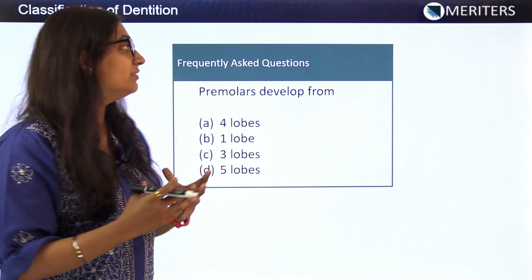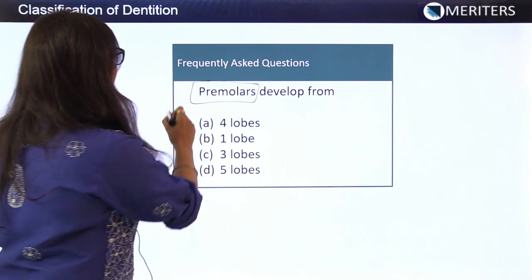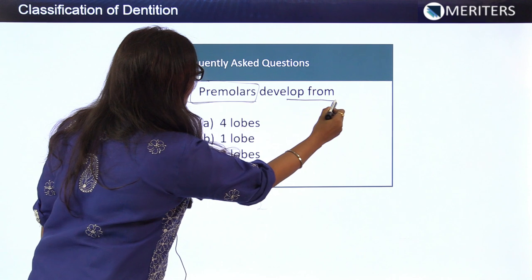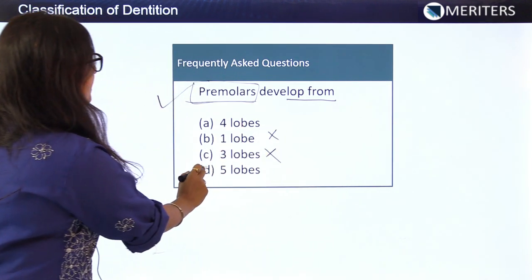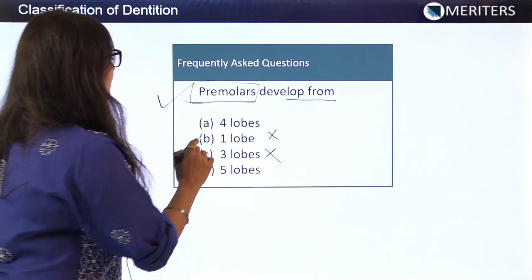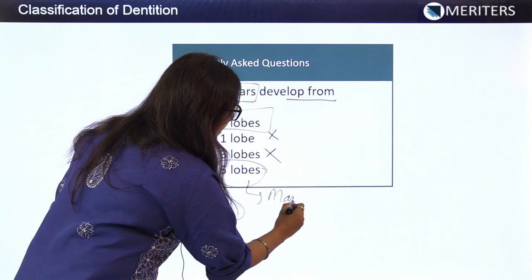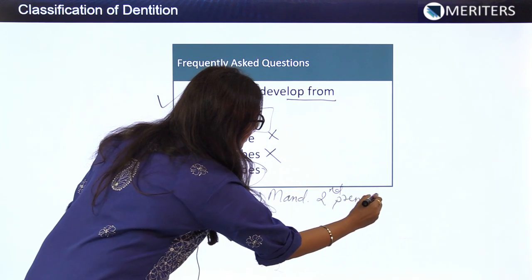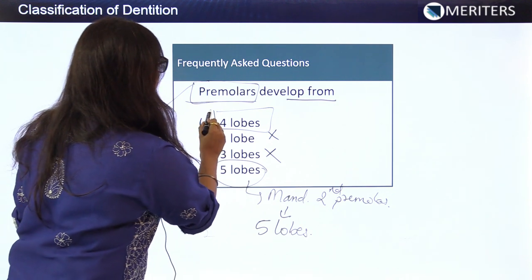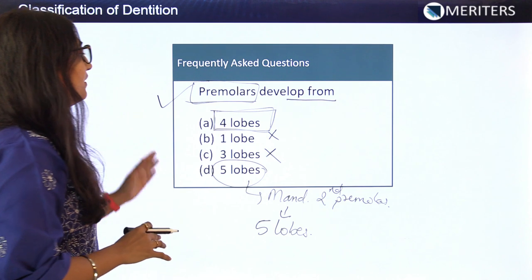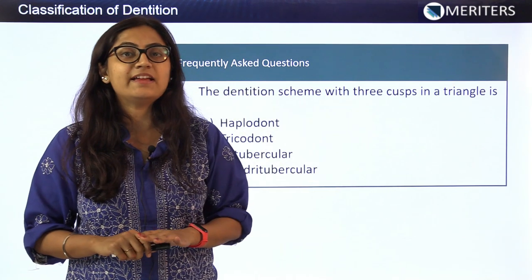Moving to frequently asked questions on classification of dentition: premolars develop from how many lobes? By elimination: one lobe — no; three lobes — no; four lobes and five lobes are the likely options. Since they haven't specified which premolar, for safety we go with four lobes. The exception is the mandibular second premolar, which is the only premolar developed from five lobes. But the safer answer is four lobes, as mandibular first premolar and other premolars develop from four lobes.